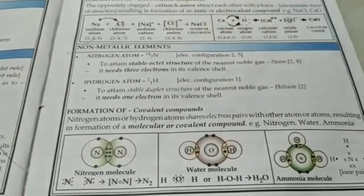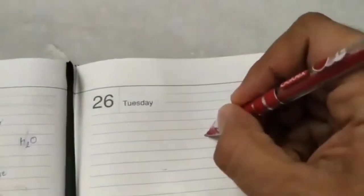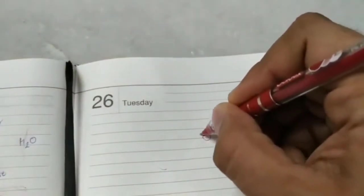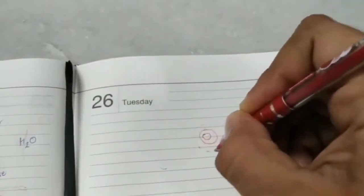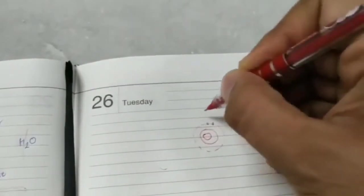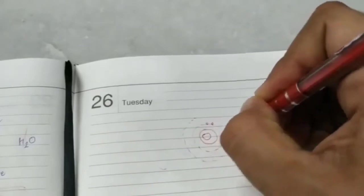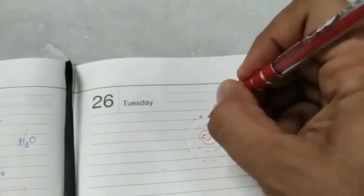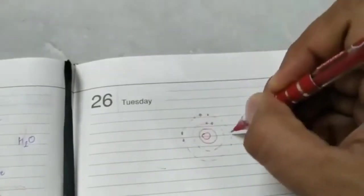Let me show how water molecule is formed. So we have this oxygen atom. This is a nucleus. The first orbit has two electrons. Yes, all orbits have to be shown compulsorily. And this one has six electrons. 1, 2, 3, 4, 5, 6.